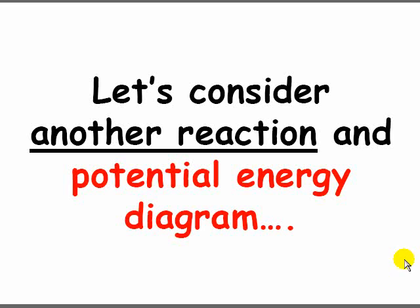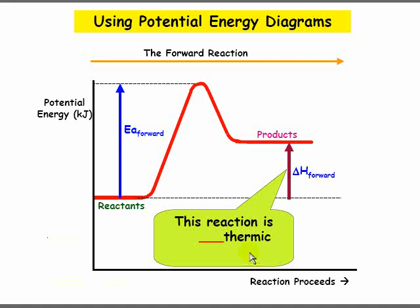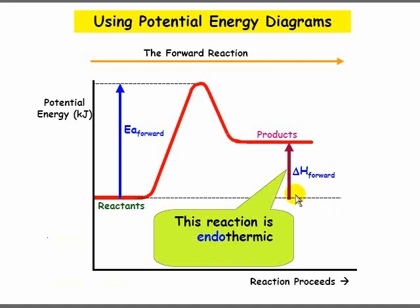Let's consider another reaction and its potential energy diagram. Looking at this one, we see the activation energy for the forward reaction and the delta H for the forward reaction. Notice this time the products are higher than the reactants. This reaction is endothermic because the delta H is positive — it goes up. We can always recognize an endothermic graph by seeing that the products are higher than the reactants.